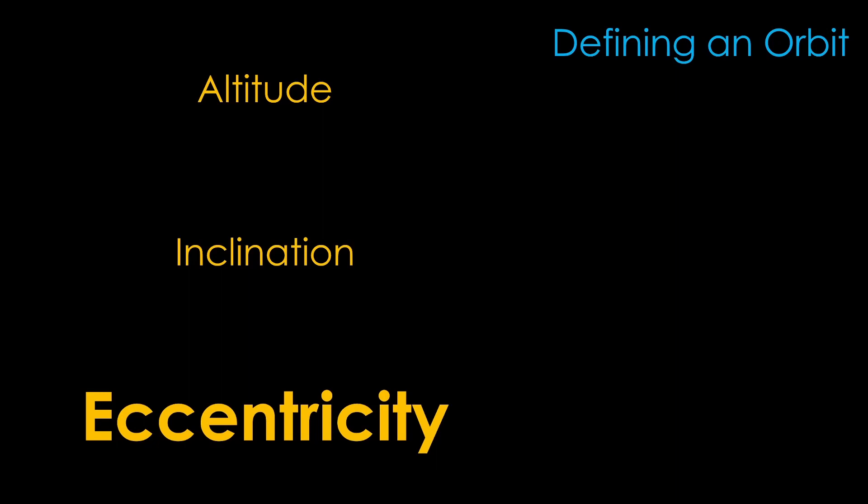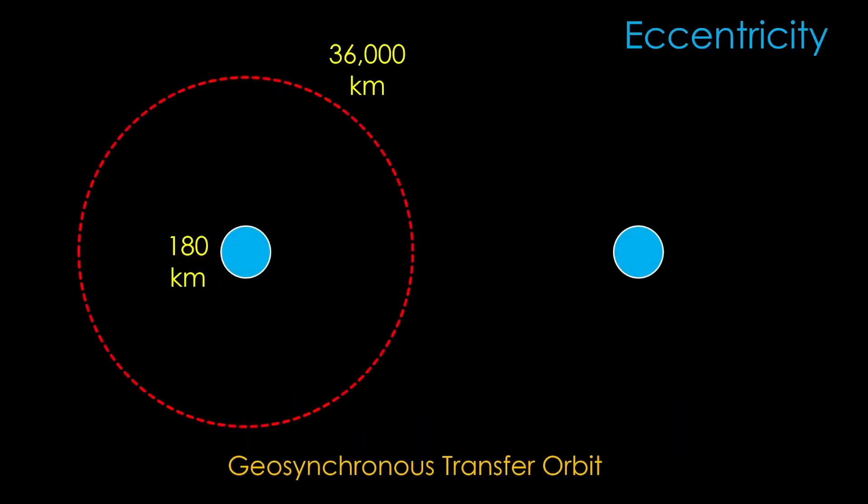The final orbital factor is eccentricity. Let's look at launching a satellite to geostationary orbit. We'll start by launching to a very elliptical orbit, where the high point, or apogee, is all the way out at 36,000 km, and the lowest point, or perigee, is all the way down at 180 km. This is known as a geosynchronous transfer orbit. The orbit is inclined at the latitude of our launch site. We need to do two things to get into our final orbit.